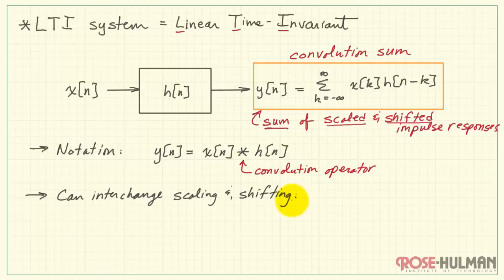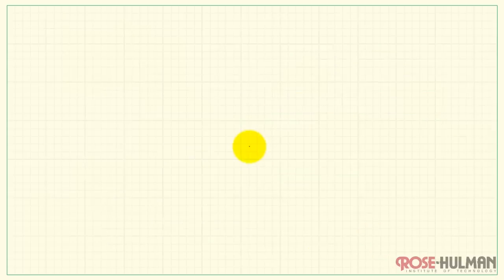Also it's interesting to note that you can interchange the scaling and shifting operations. I can take this sum and simply rotate out h and x. Generally we use whichever form is more convenient for computation. Alright, let's see how this plays out with an example.